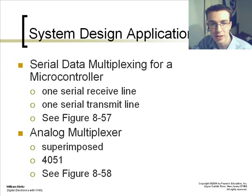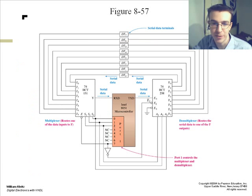As another system design application, you have a serial data multiplexing for a microprocessor. This is one serial receive line and one serial transmit line. Another thing is an analog multiplexer. This is your microcontroller receive and send out transmit line multiplexer.